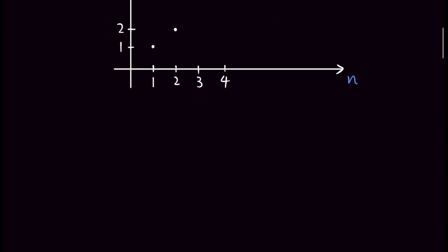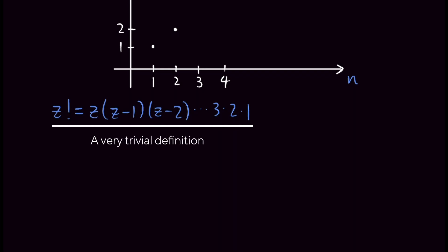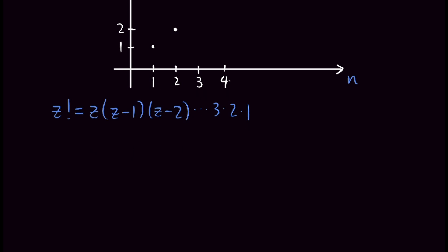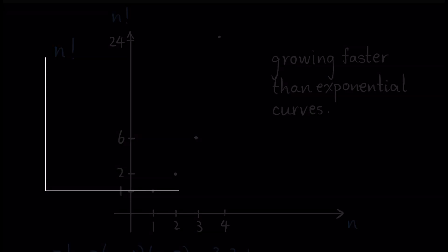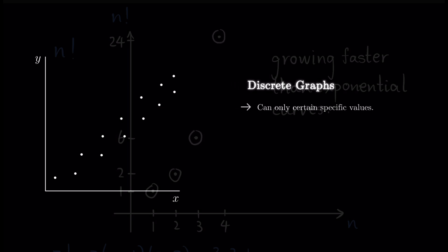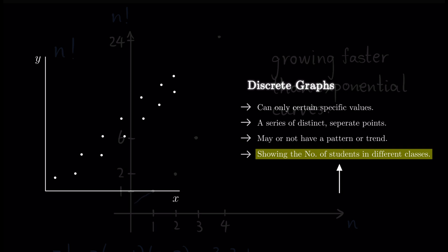Let's recall what the factorial function is defined to be. I'm going to use z factorial — it's just another variable, we can say a factorial, gamma factorial, it's just a number. So z factorial is defined to be z times z minus 1 times z minus 2, all the way to 3 times 2 times 1. So 5 factorial is equal to 5 times 4 times 3 times 2 times 1, which evaluates to 20 times 6, which is 120. As you can see from this top graph, the factorial function is a discrete function that's only defined for positive integer values.